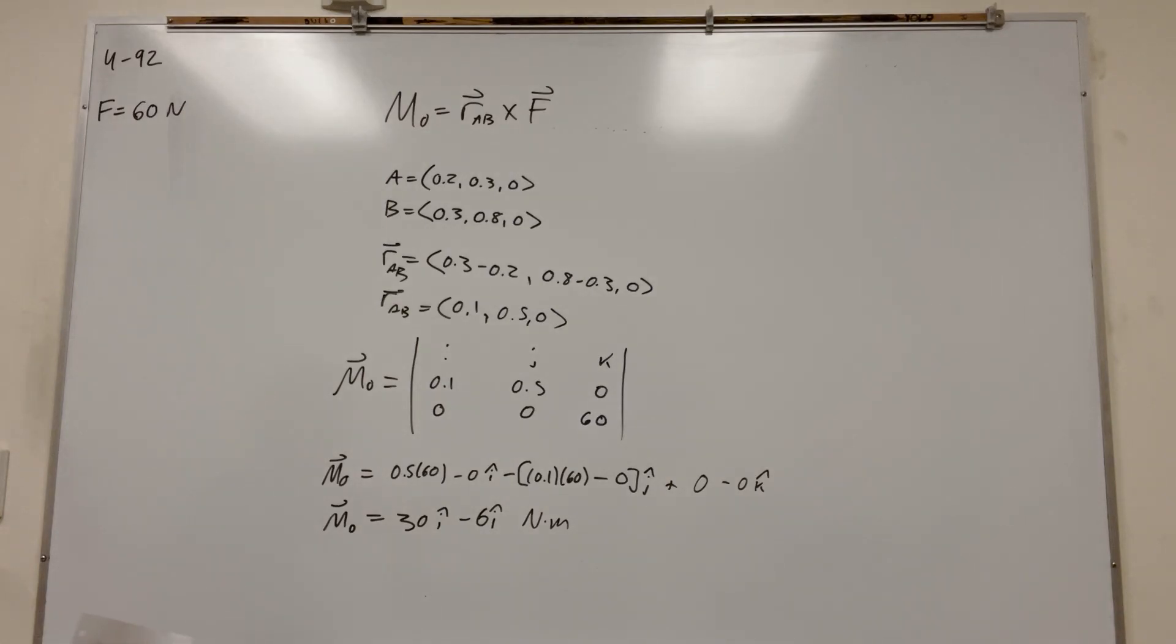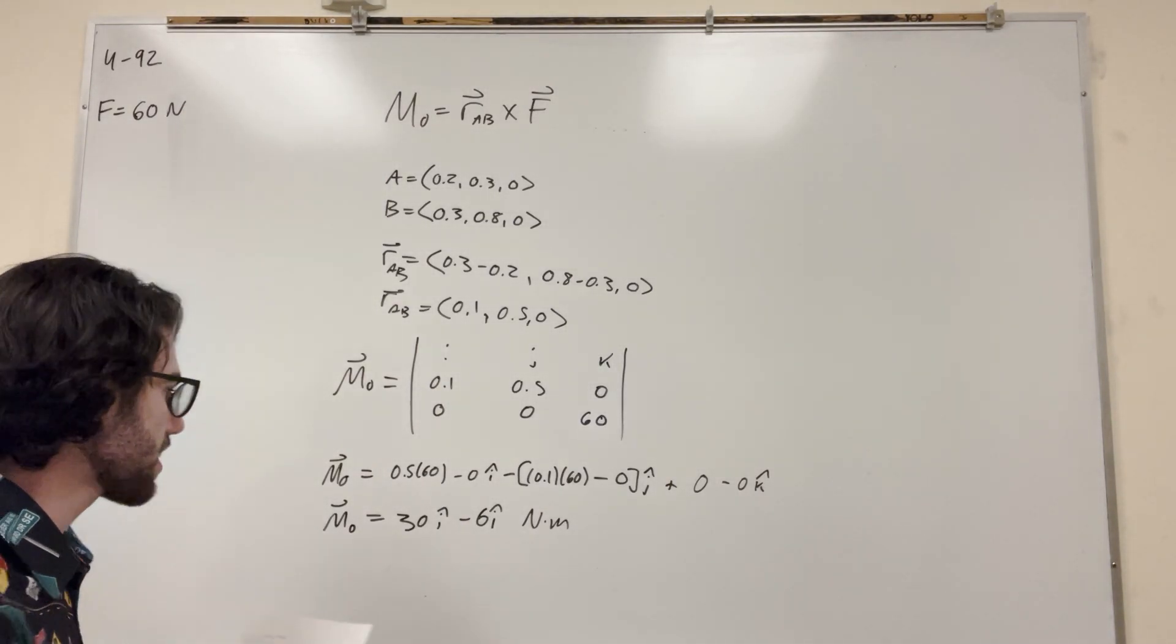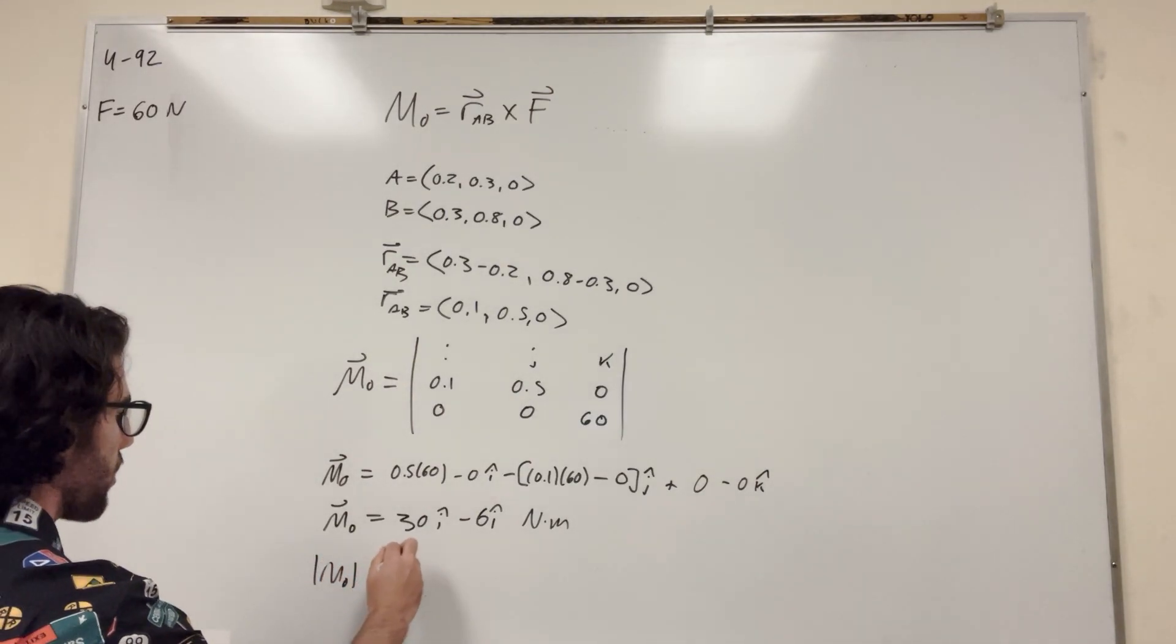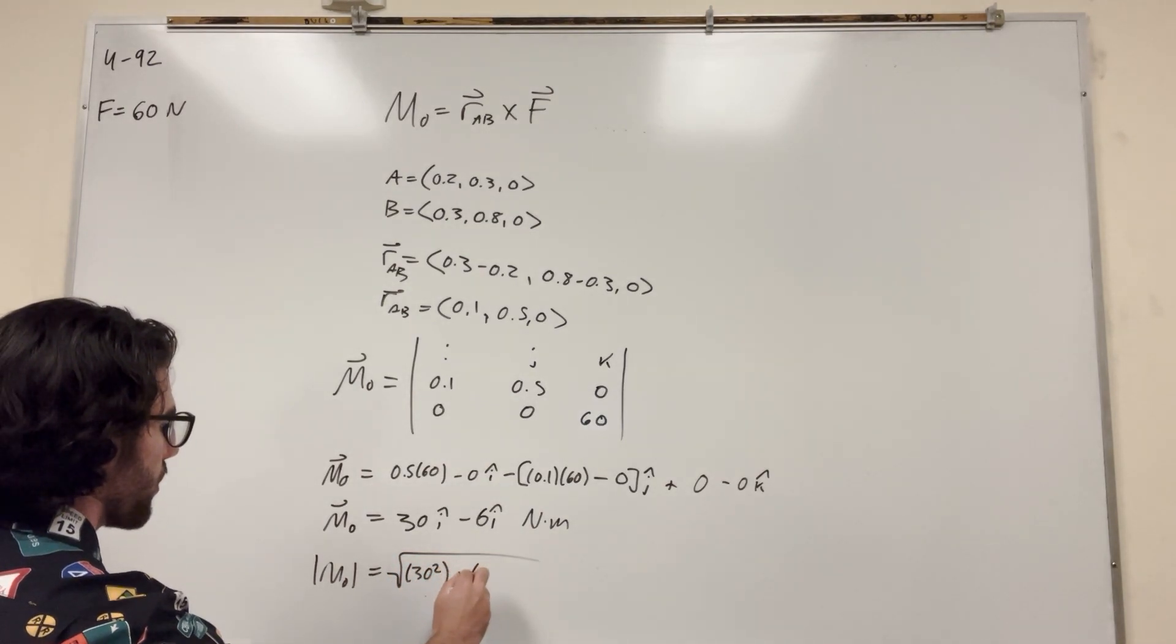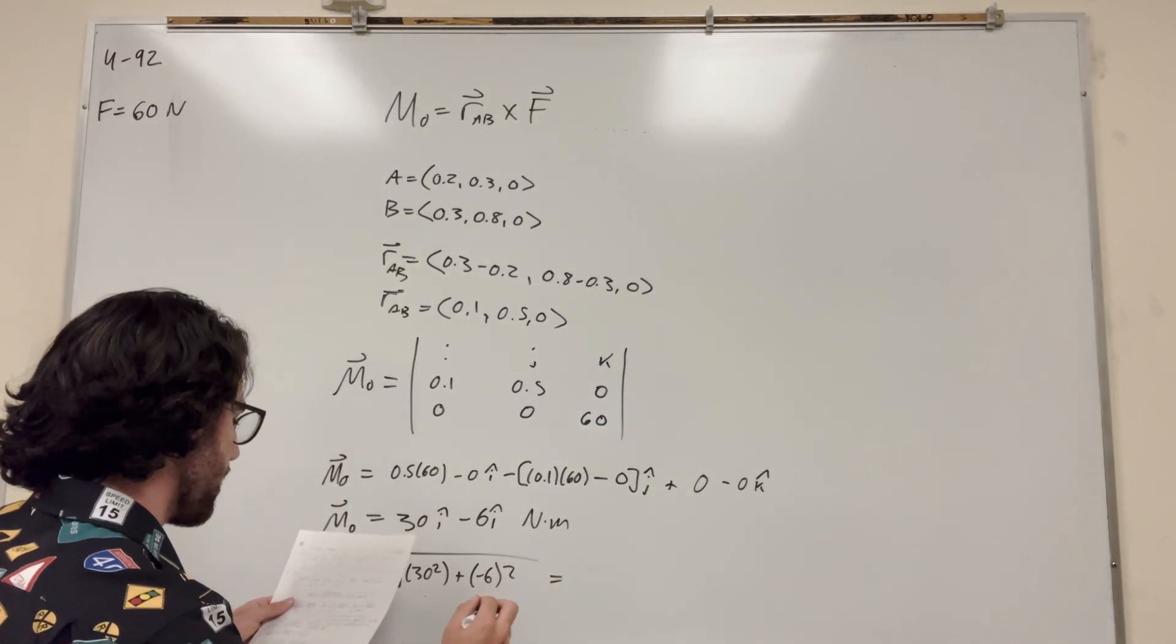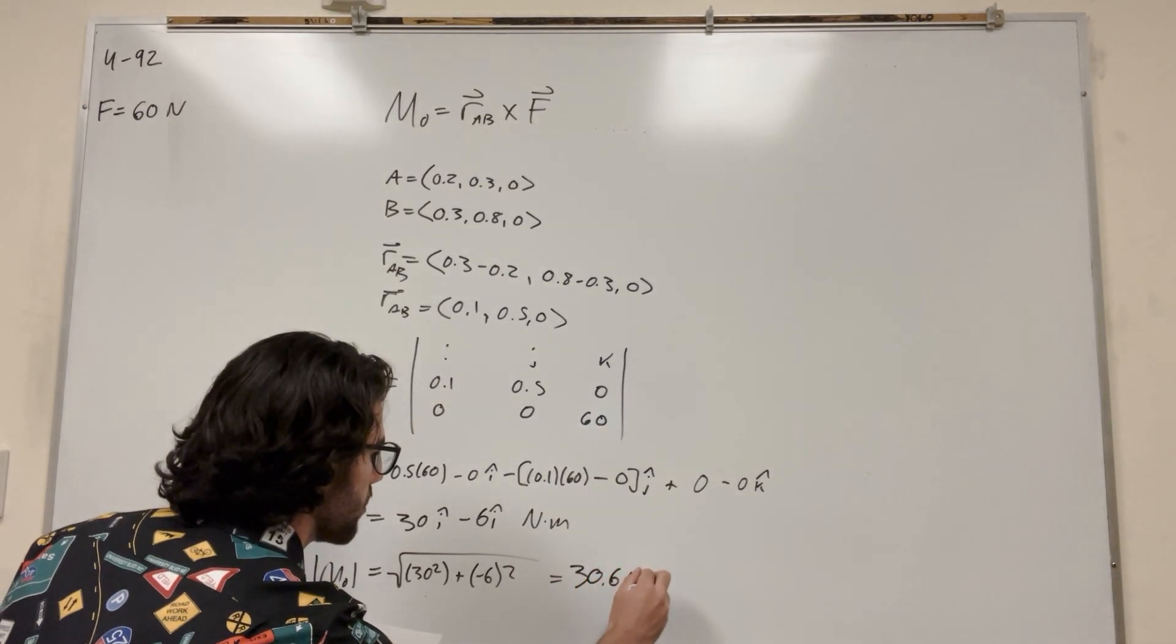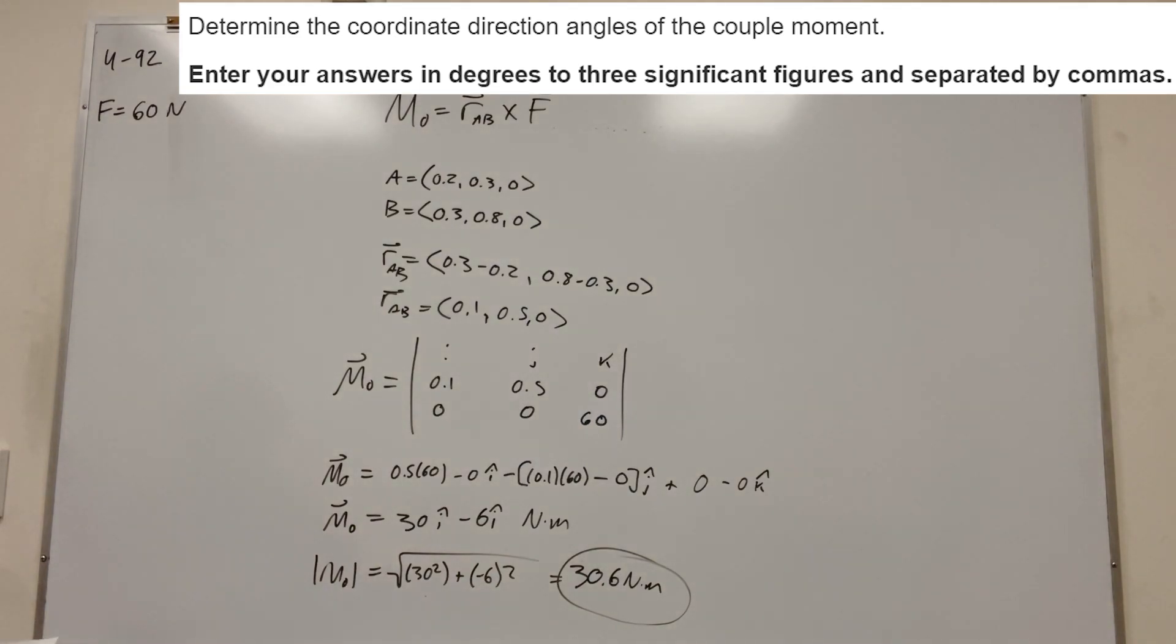Alright. Cool. Okay, so then we want to find the magnitude of this. I think that's what it's asking for. So magnitude of M is equal to the square root of 30 squared plus the square root of negative 6 squared. And then this is going to give you 30.6 newton meters. So that's answer to part A.